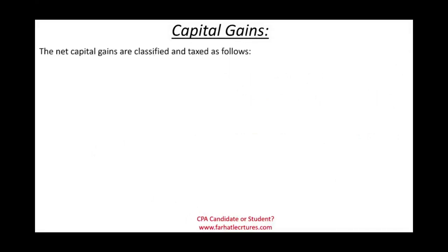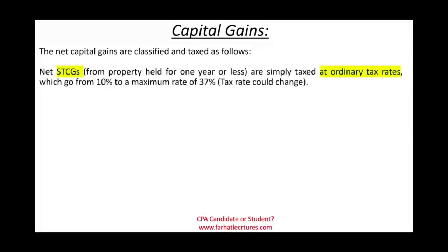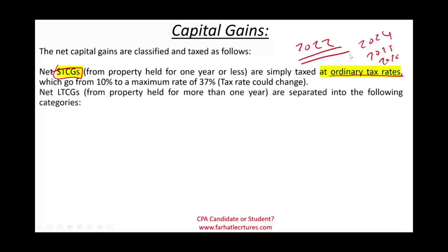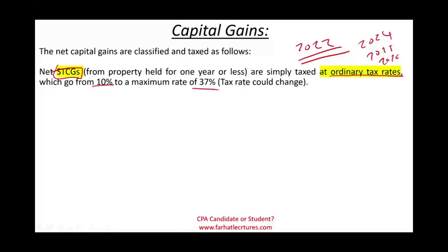Net capital gains are classified as follows. Net short-term capital gain is taxed based on your ordinary tax rate — there's no preference. For 2022, that rate ranges from 10% to 37%. Keep in mind if you're watching this in 2024, 2025, or 2026, those rates may have changed.